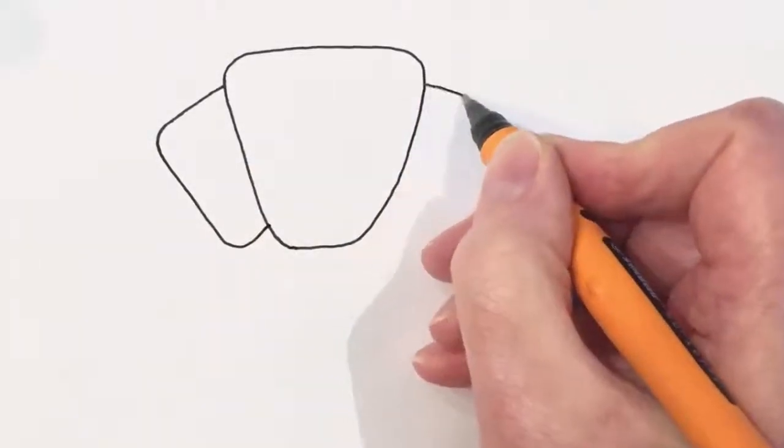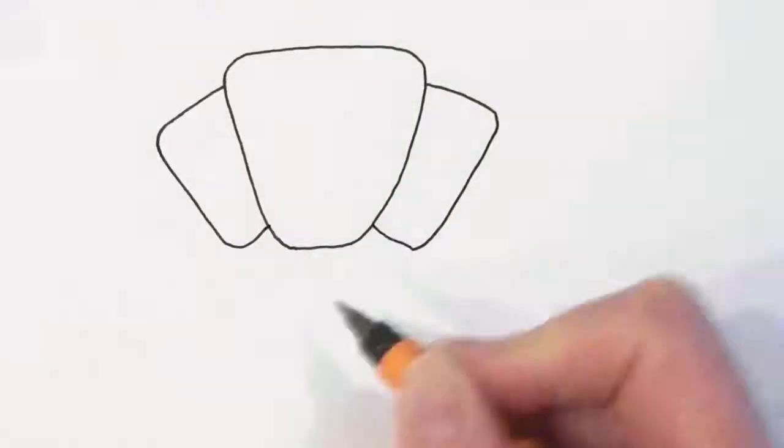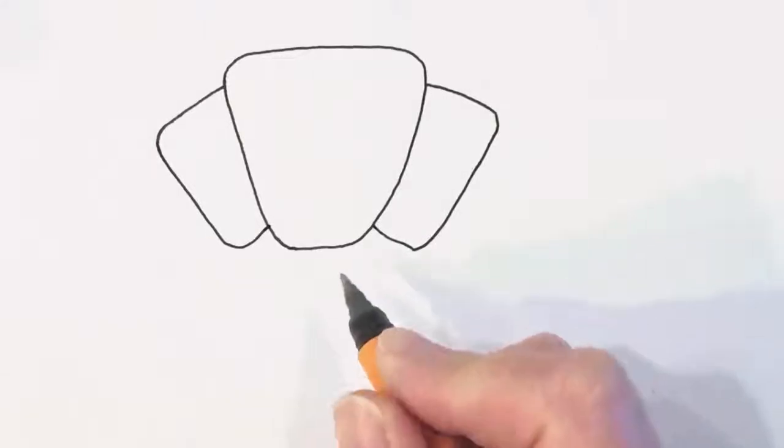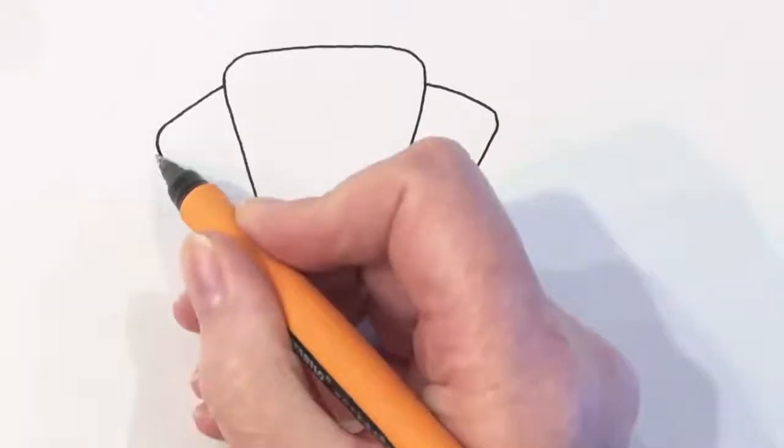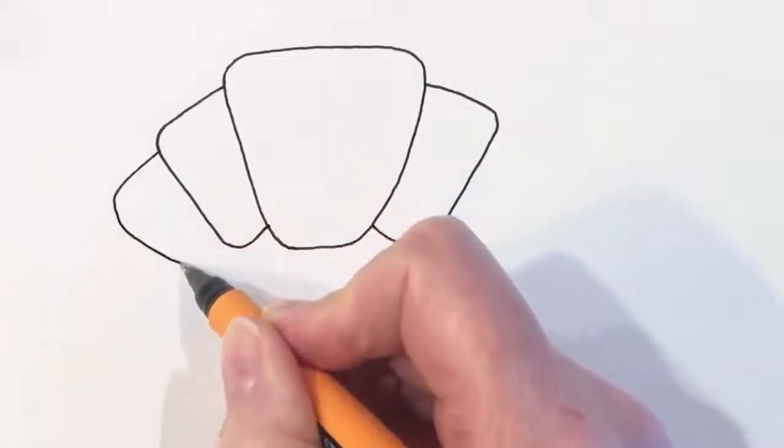And we're going to draw something pretty similar on the other side. But you know what, if it's not exactly the same it doesn't matter. This is a croissant, these are pastries, they're made by hand and so they're going to all look a little bit different.